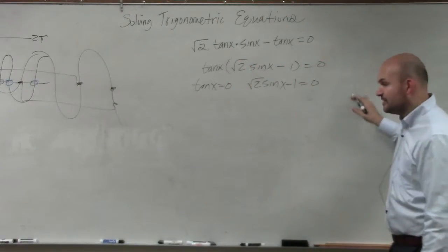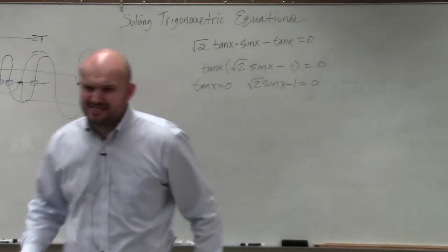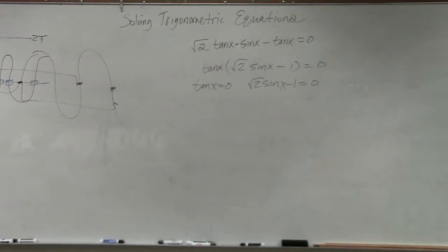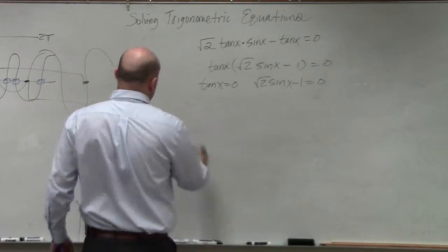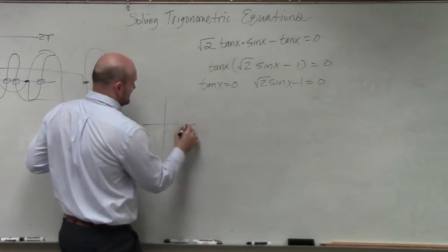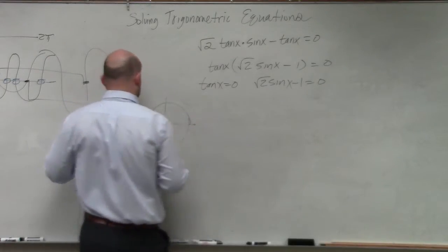Well, first of all, we've got to figure out when is tangent of x equal to 0. Now, remember, tangent represents y over x, right? So when tangent represents y over x, that means basically, for it to be 0, our y coordinate needs to be 0, right?